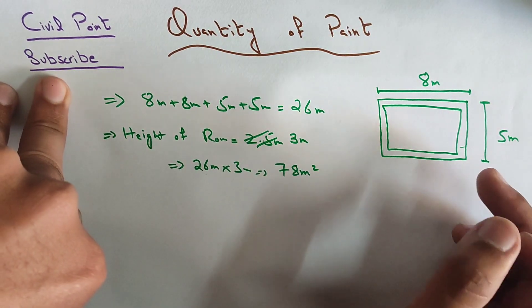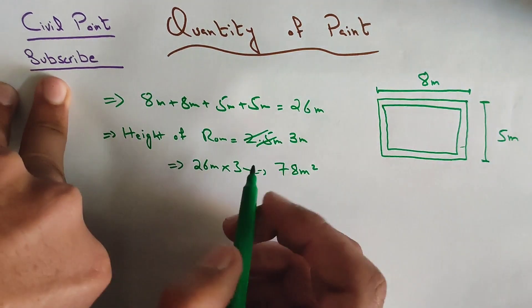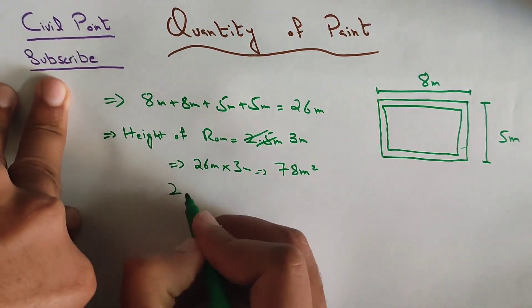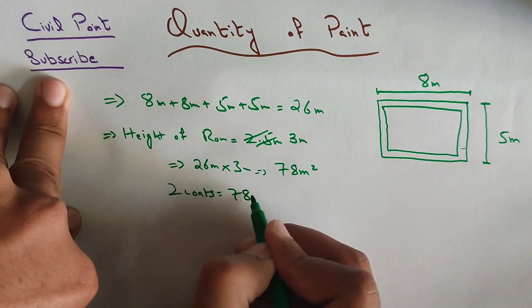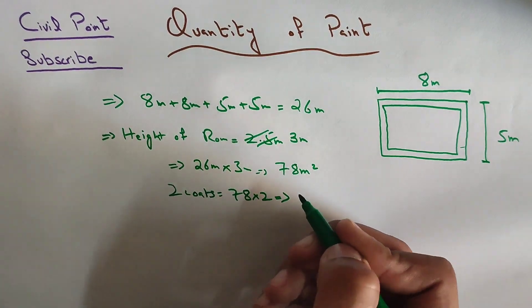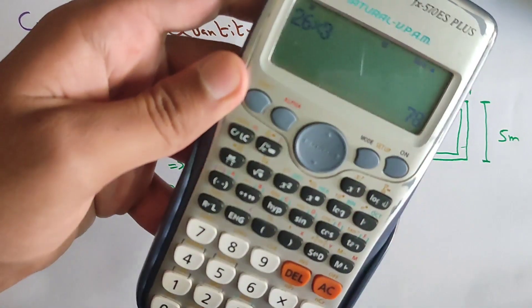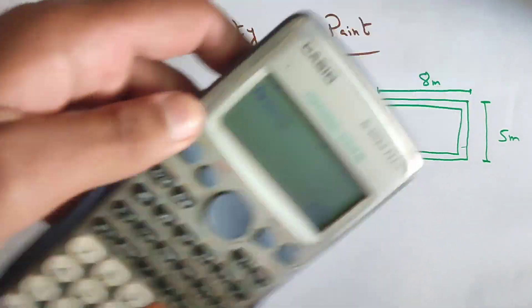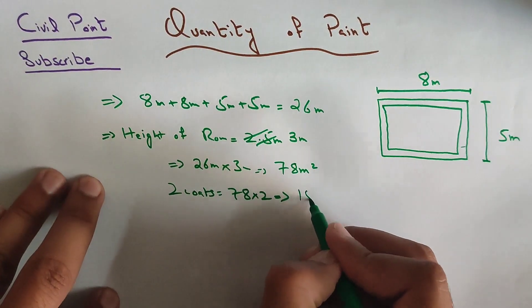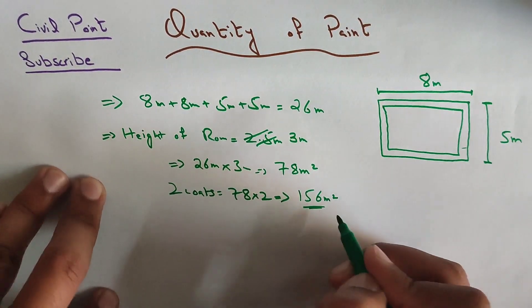Normally we do 2 coats for the paint, so for 2 coats we have to multiply this one by 2. So we multiply 78 by 2, it will be 156 square meters.